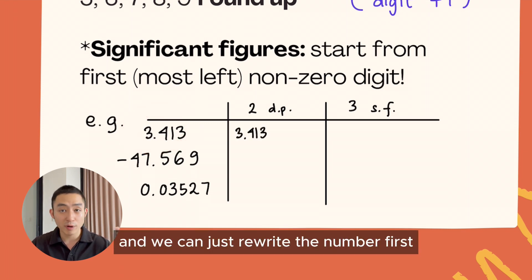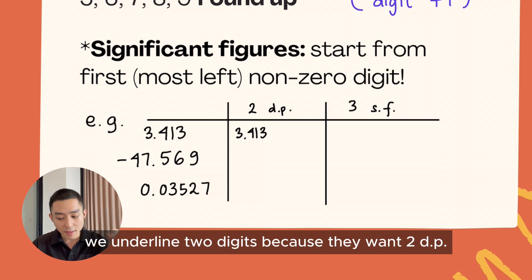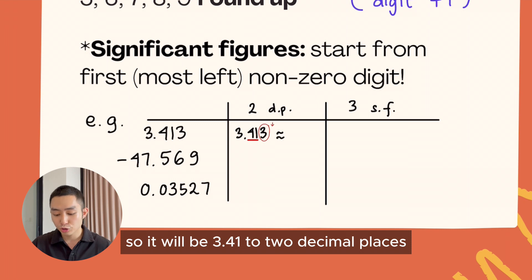We can just rewrite the number first, and then from the decimal places, we underline two digits because they want two. The next digit after that number is three, which means we round it down. So it will be 3.41 to two decimal places.